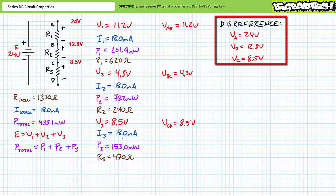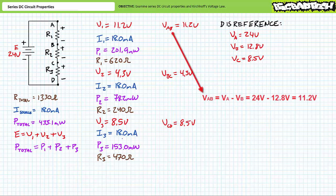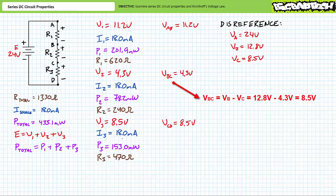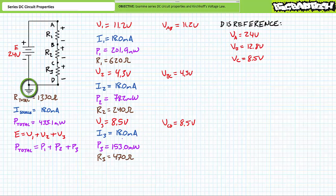Similarly, VBC equals VB at 12.8 volts minus VC at 8.5 volts, yielding VBC equals 4.3 volts. You'll note sometimes circuits make use of a ground reference. Customarily, the source's negative terminal is ground referenced, although other grounding schemes exist. For example, if the source's negative terminal at node D was electrically connected to ground, we could use some other grounded object as a reference point for all voltage measurements. Point A would be 24 volts higher than the grounded frame, point B would be 12.8 volts higher, and point C would be 8.5 volts higher.